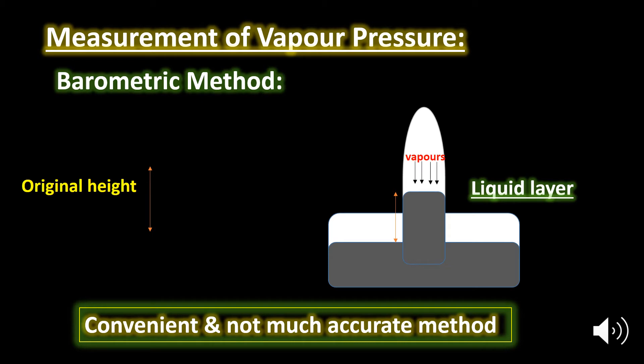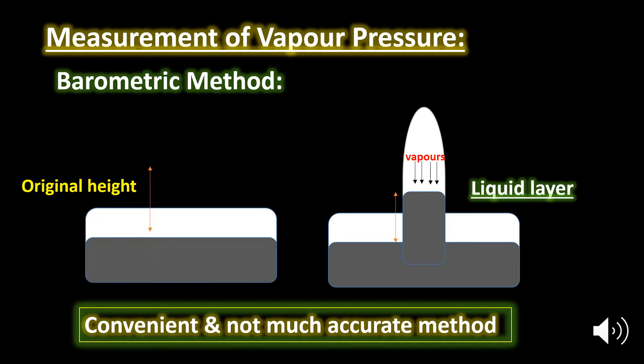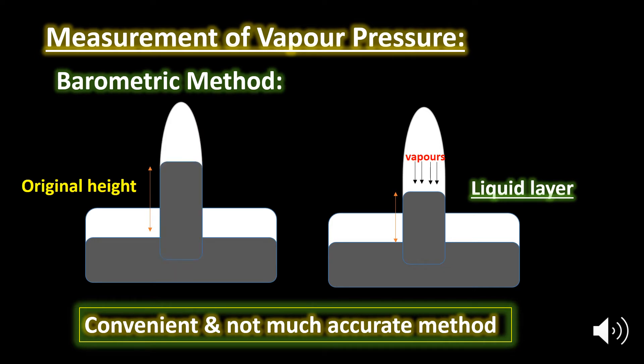In this method, a dish filled with mercury is taken and the barometric tube is also filled with mercury. The tube is then inverted into the dish and the height of the mercury column is noted.